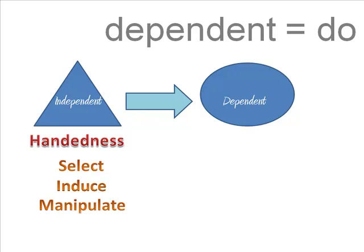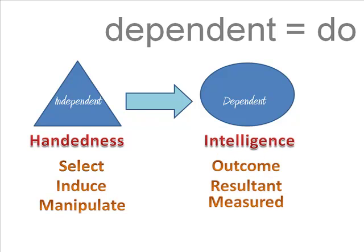In contrast, a dependent variable depends on the subject's performance. If they don't do something we can see and measure, we can't do the experiment. The outcome or resultant variable depends on them.